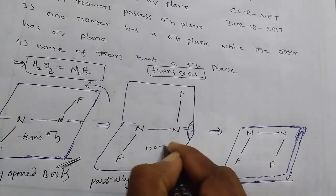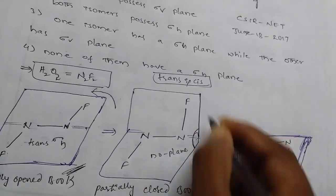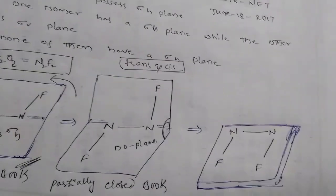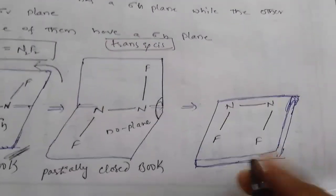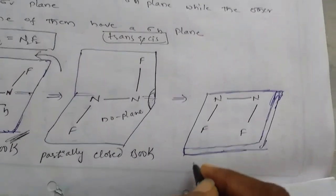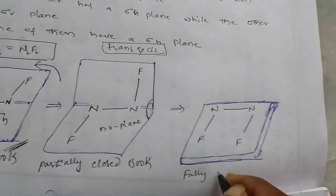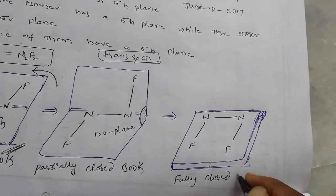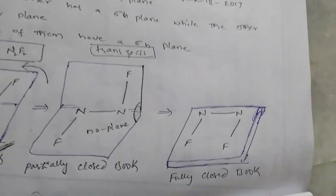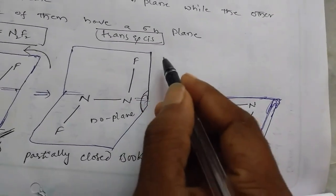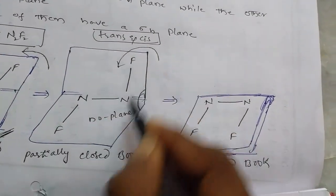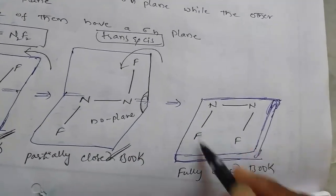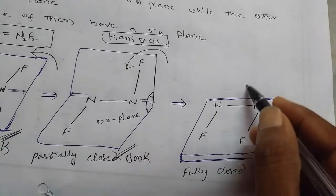So here there is no plane of symmetry because it has an angle. Next, if you observe, this is fully closed book-like structure. That means it is completely put on this one, this sheet. It's fully closed.